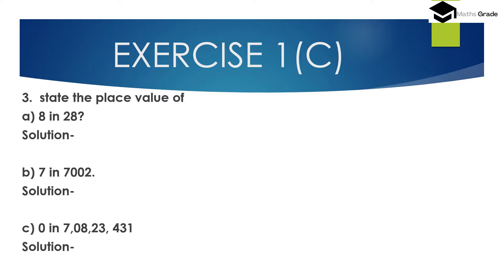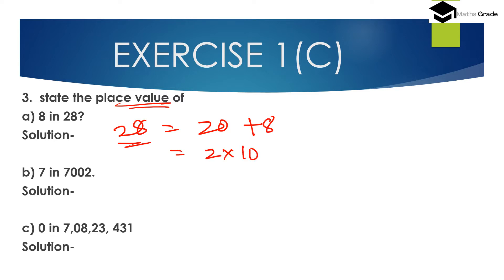Now question number 3. State the place value — part A: find the place value of 8 in 28. Place value means the digit and which place it occupies. We can write 28 as 20 plus 8, that is 2 times 10 plus 8. So 2 is in the tens place and 8 is in the units place. Therefore, the place value of 8 in 28 is 8.